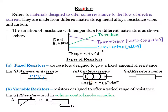So today we are looking at resistors. Let's start by defining what we mean by the term a resistor. Resistors are simply materials which are designed to offer some resistance to the flow of electric current. Resistors are usually made from different materials — for example, we have the metal alloys, we have resistor wires, and also carbon.